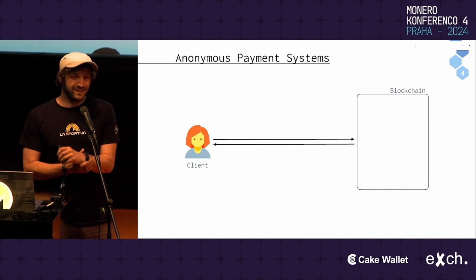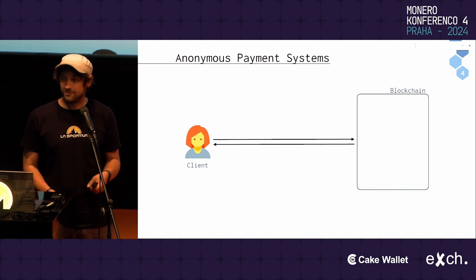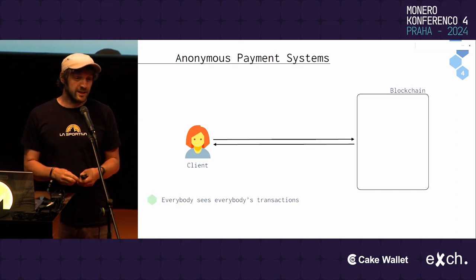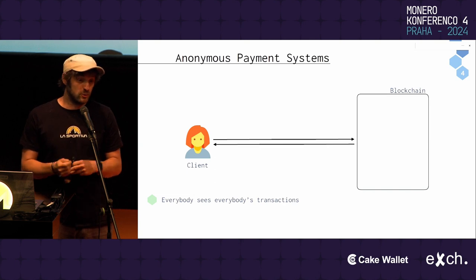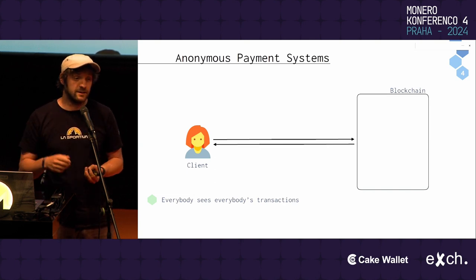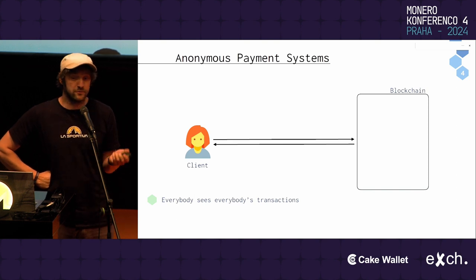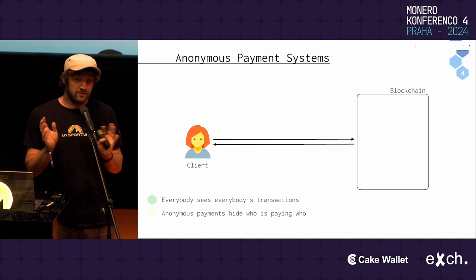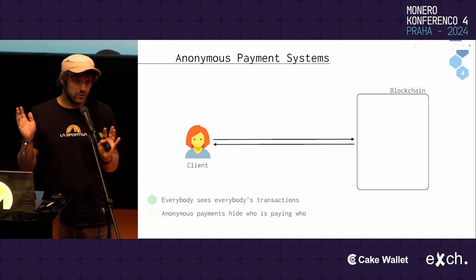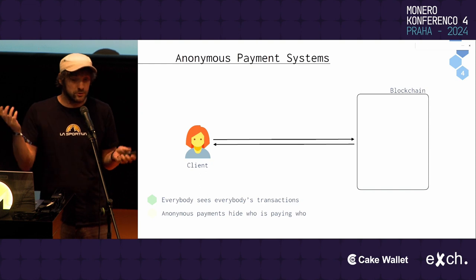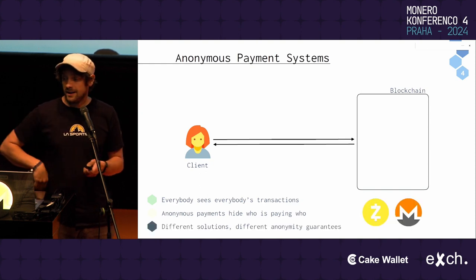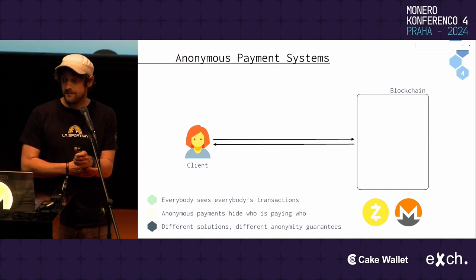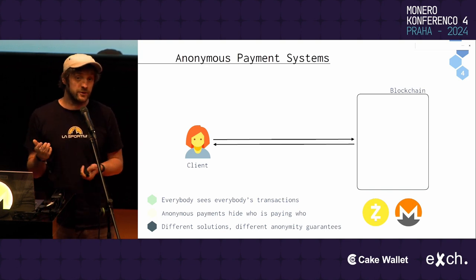A separate thing you might want is anonymous payments. By default in classical blockchains, you post transactions and everybody sees everything that is happening — you might not want that. You want transaction privacy: when you pay someone, by observing the blockchain and observing what you do, nobody should be able to tell who you paid. There are different solutions to this — eCash, Monero, and others — and they all provide very different anonymity guarantees.